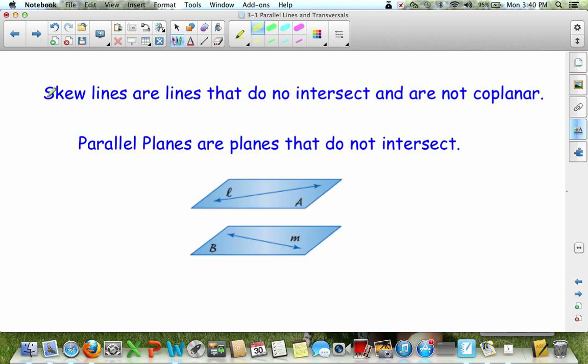The next vocabulary word is skew lines, or lines that do not intersect and are not coplanar. So if you notice in this picture, this line L and this line M are skew because they are not in the same plane.